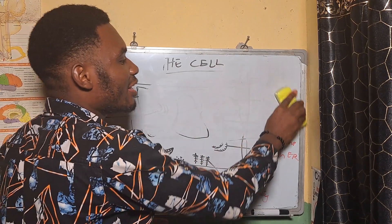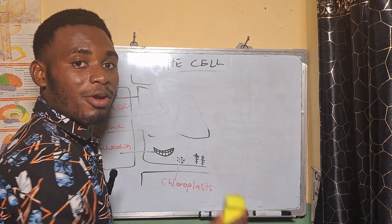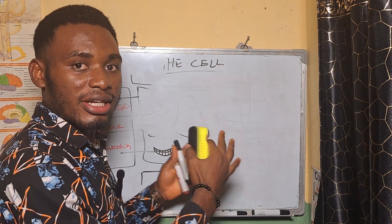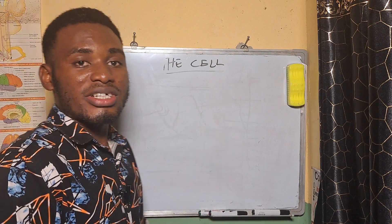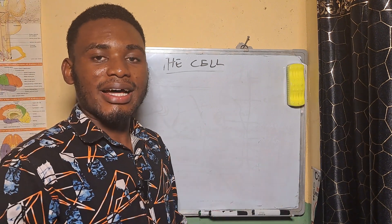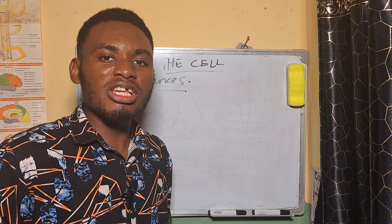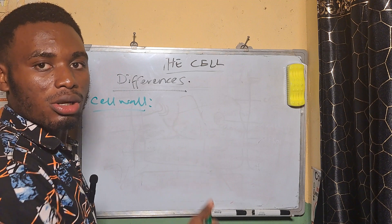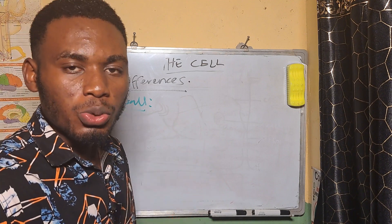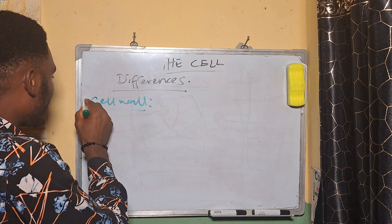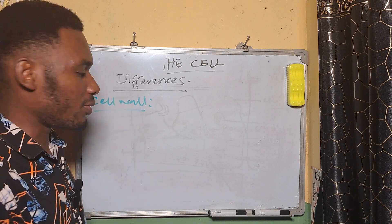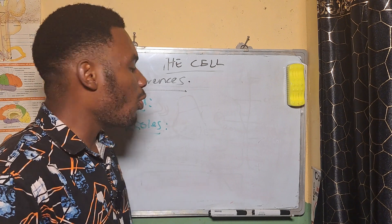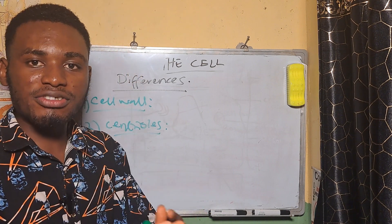I will be talking about the similarities and differences between the plant and the animal cell, because in every exam you tend to see this subtopic. The first and major difference between the plant and animal cell is the cell wall — the plant cell has a cell wall while the animal cell does not. The second difference is the centrioles — the animal cell has centrioles while the plant cell does not.